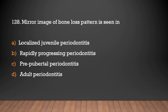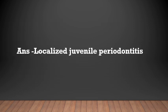Mirror image pattern of bone loss is seen in: localized juvenile periodontitis, rapidly progressing periodontitis, prepubertal periodontitis, or adult periodontitis? The answer is localized juvenile periodontitis.